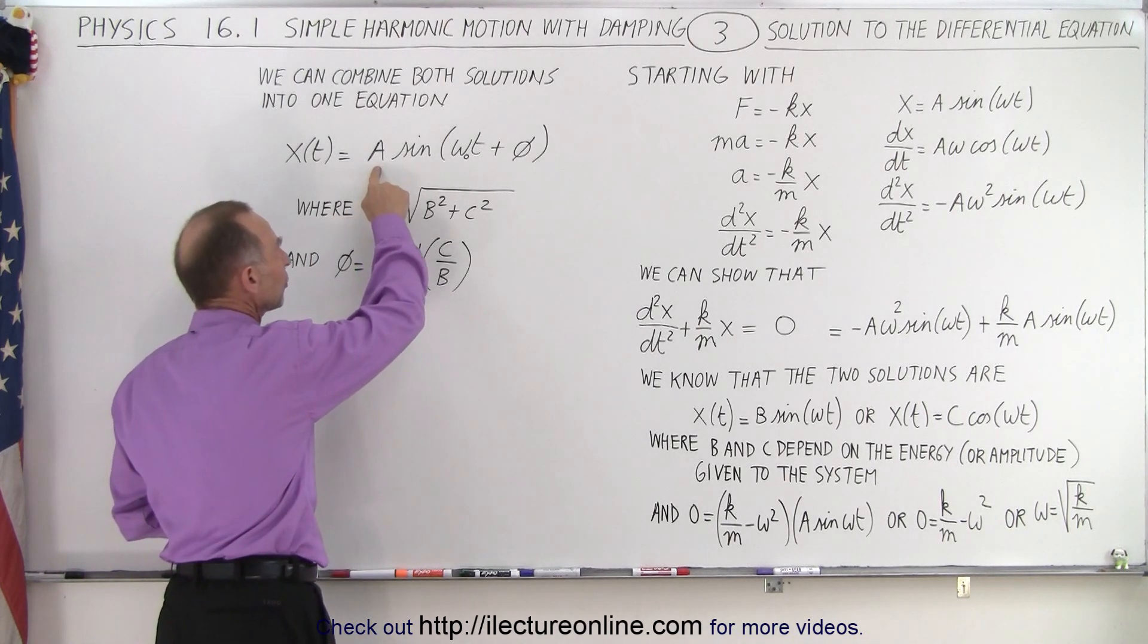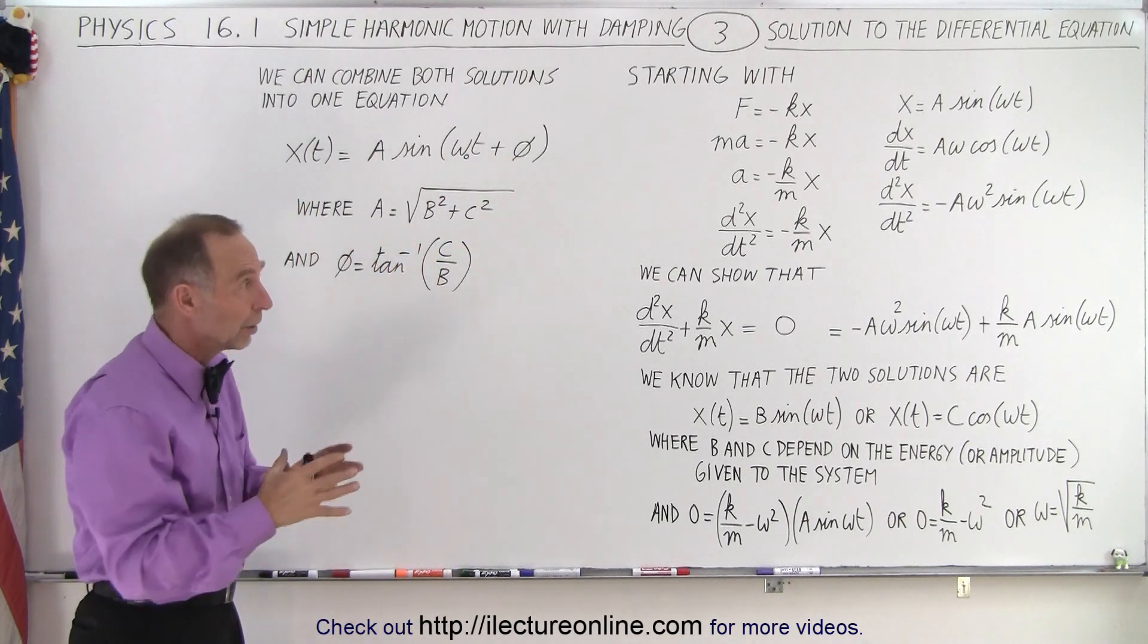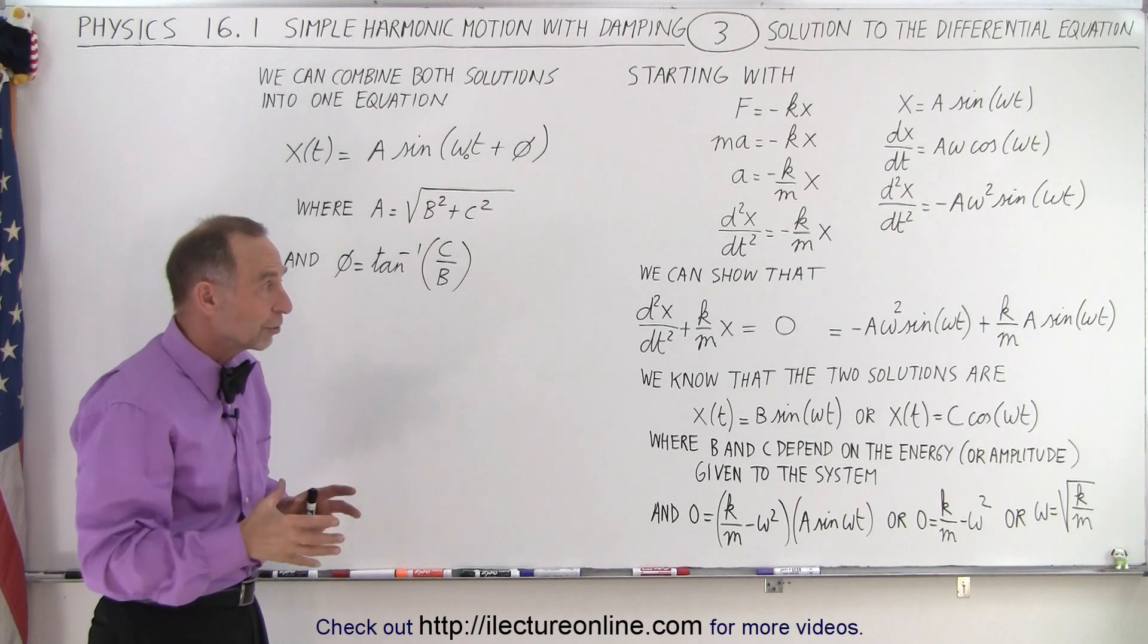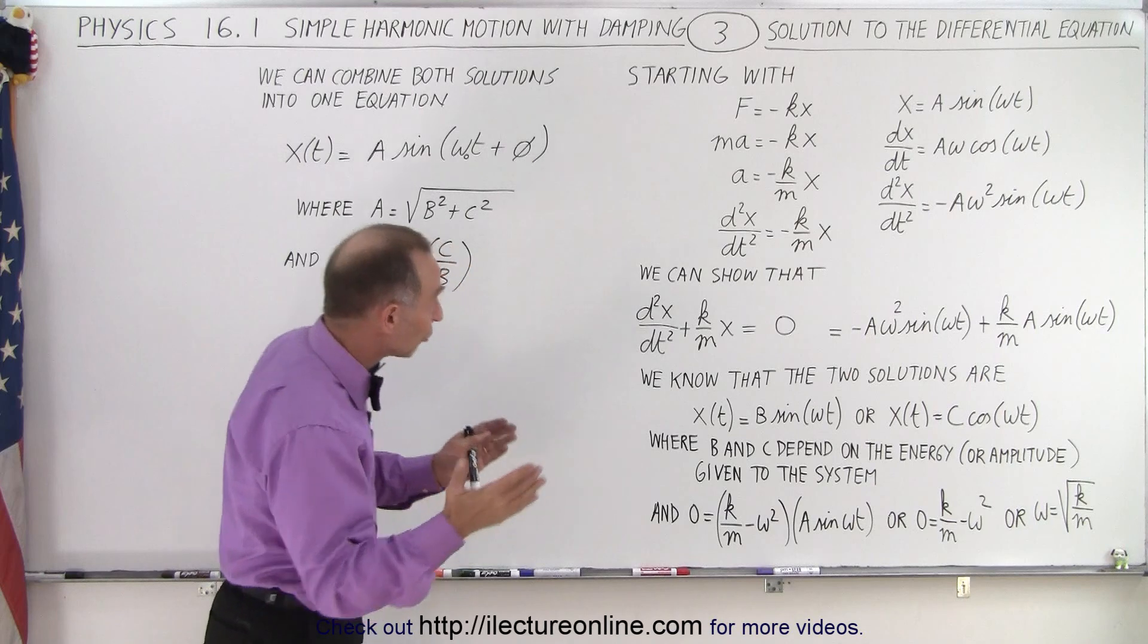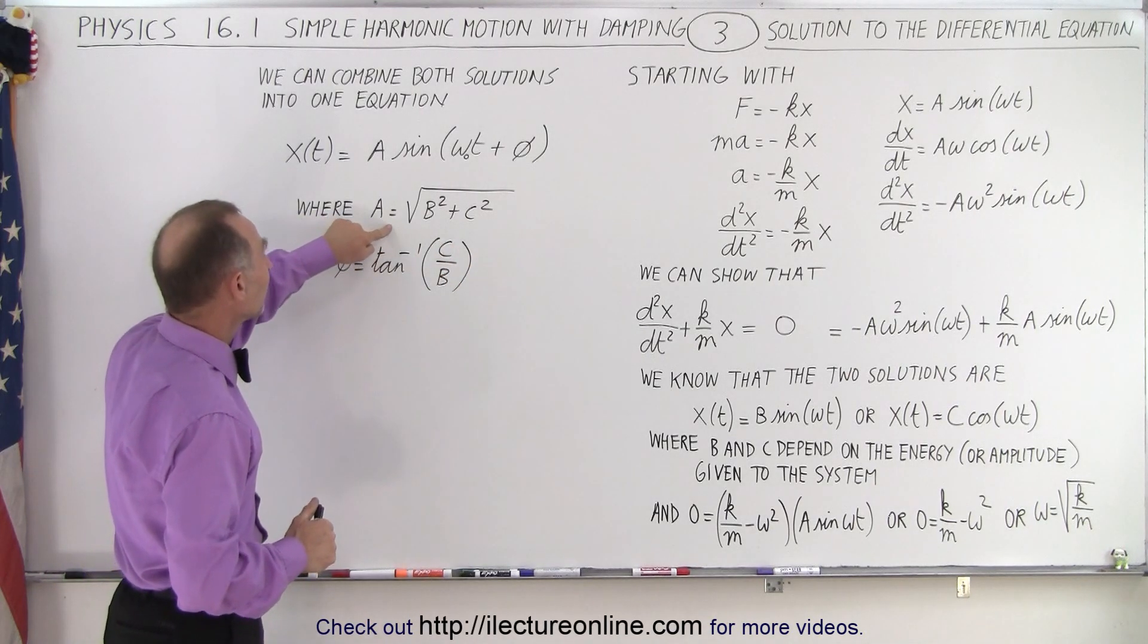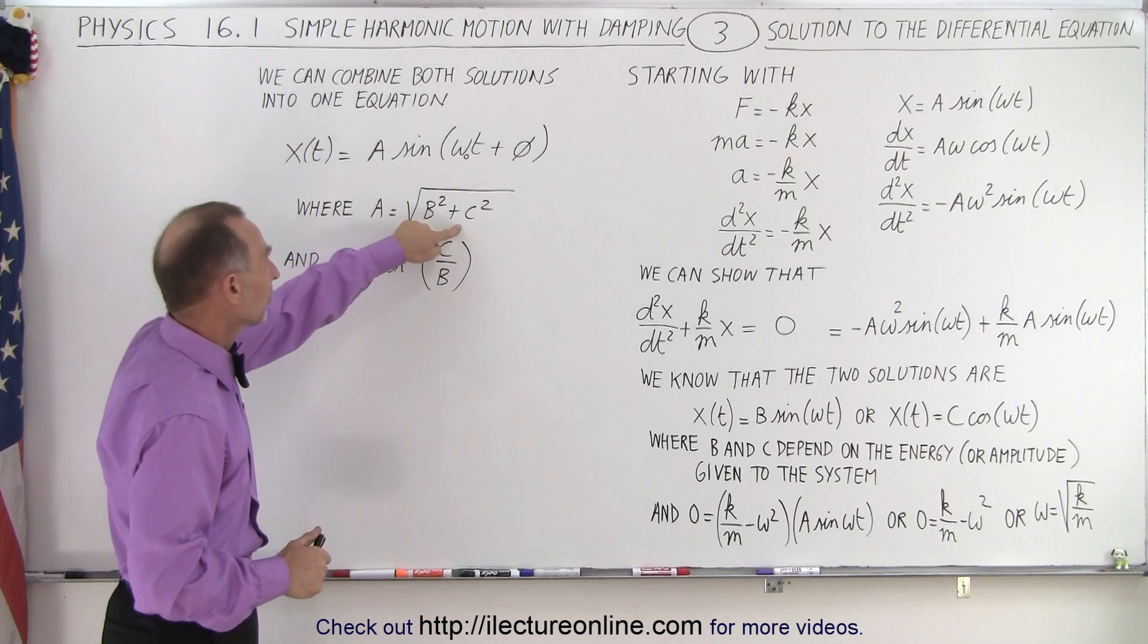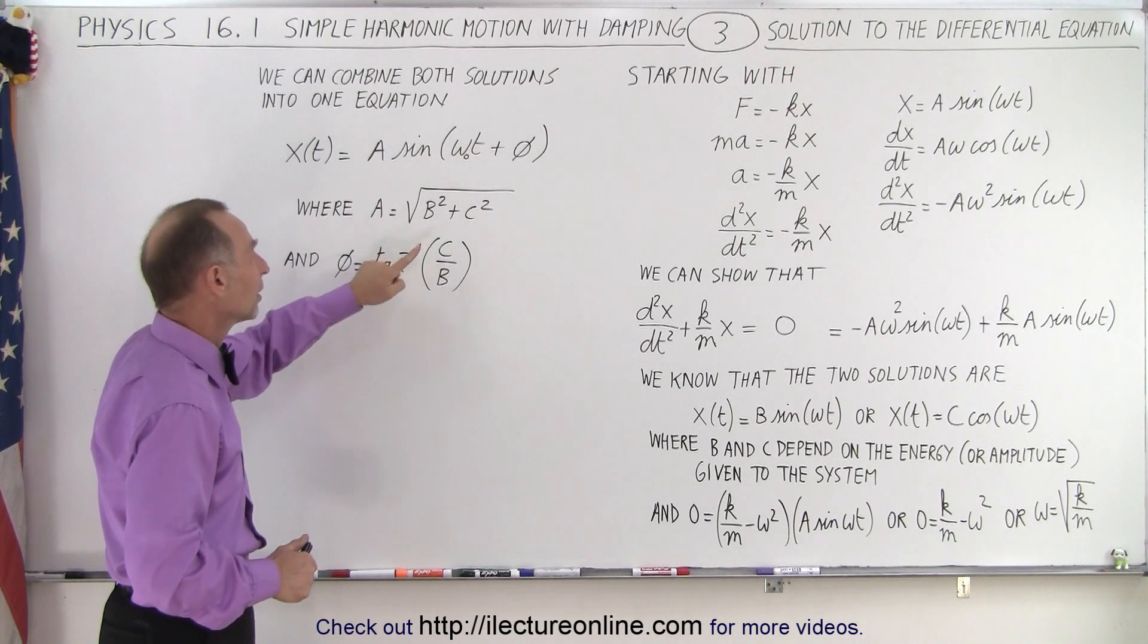And so A would be the amplitude of the motion, and then there would be a phase angle, because when you combine the sine and the cosine function, and the constants B and C are of different amplitude, then yes, you're going to have some sort of phase angle. And the result is that A is simply equal to the square root of B squared plus C squared, and the phase angle is the inverse tangent of C over B.